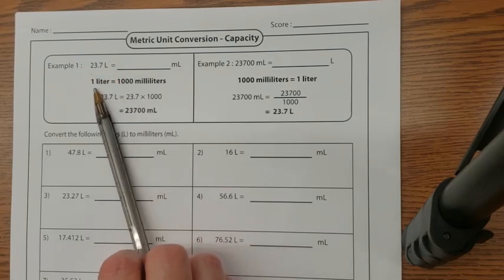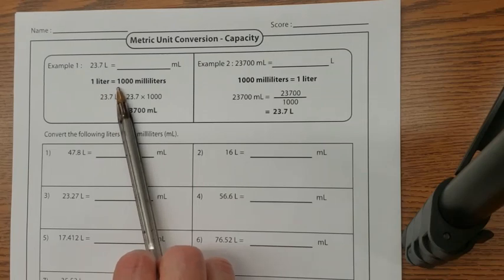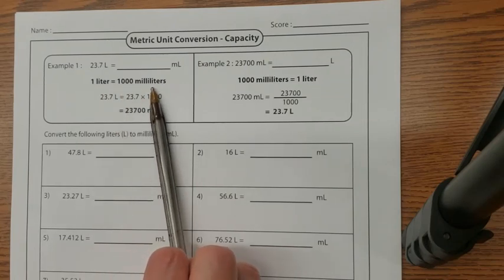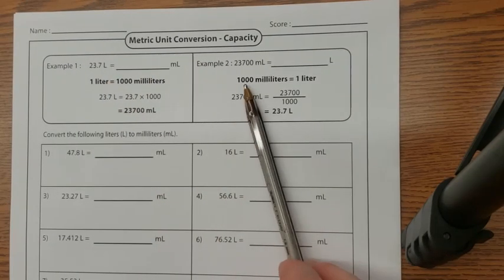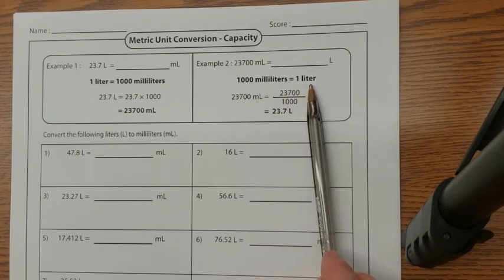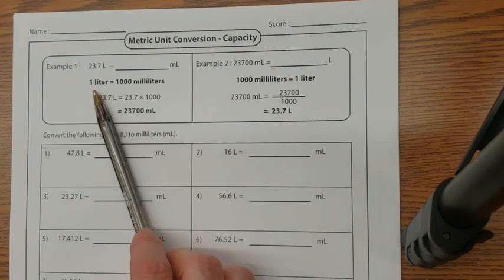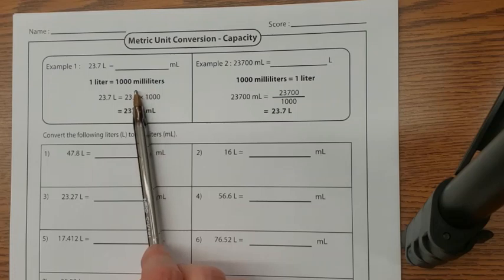Now, one liter is equal to a thousand milliliters. Or we can flip that around and say a thousand milliliters is equal to one liter. So a liter is the big one, and a milli, milli means a thousand.